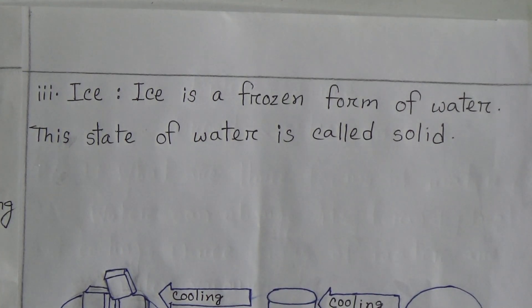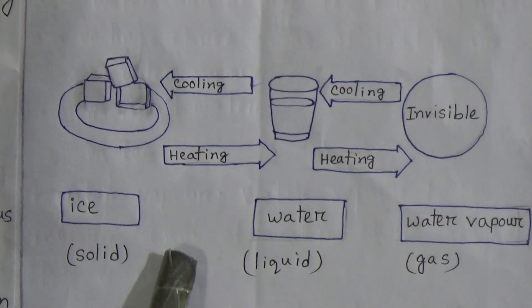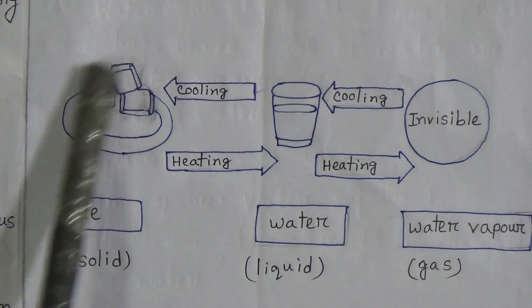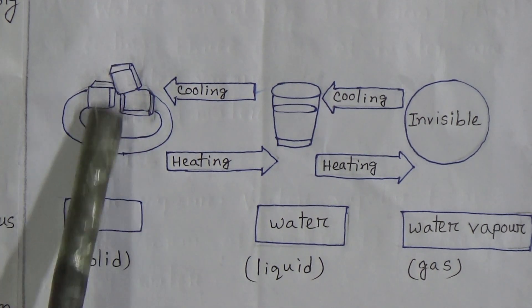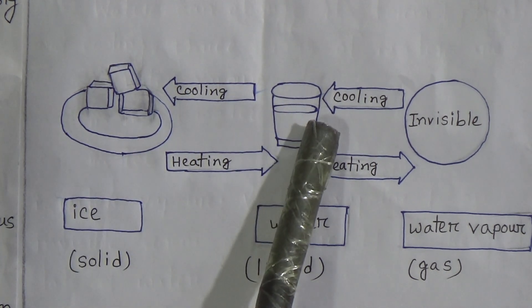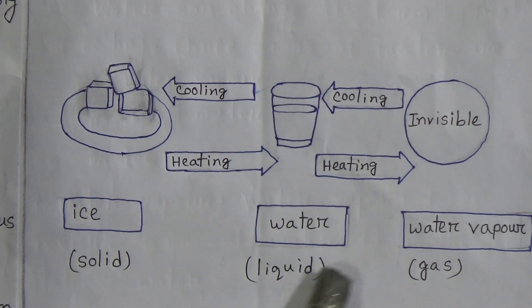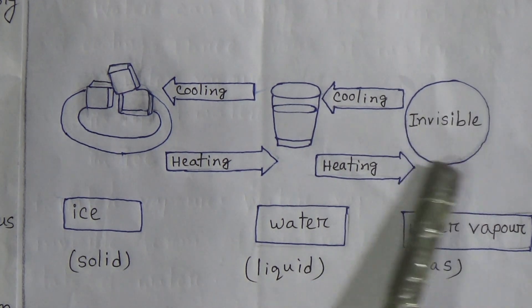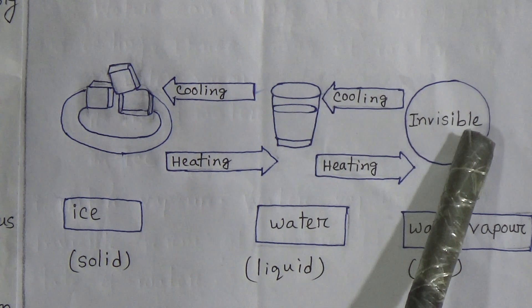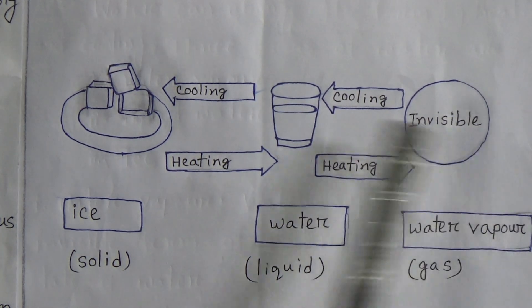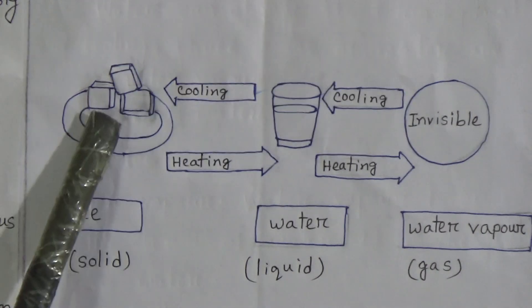My dear students, now see this figure. We will understand this question answer from this figure. This one is ice — this is the solid state. This is liquid water — this is the liquid state. And this is the invisible form, which is the gaseous state of water.